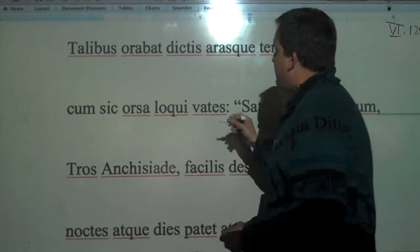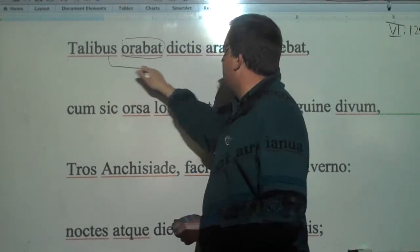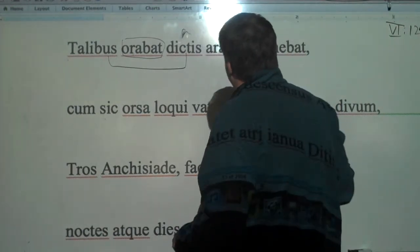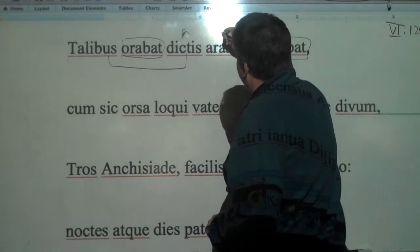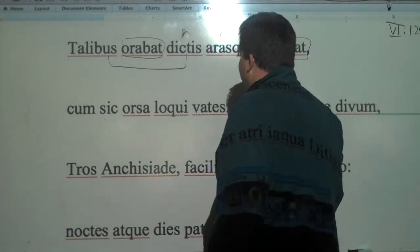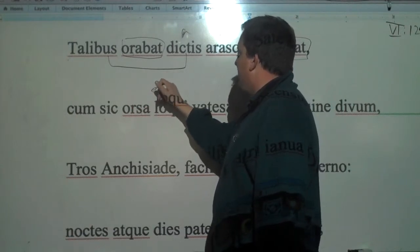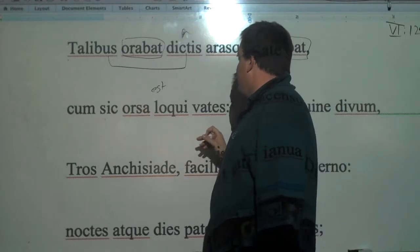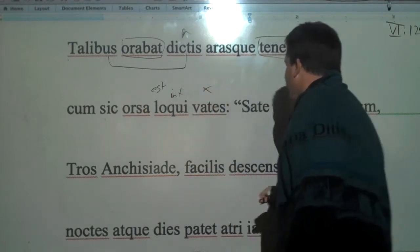So we have here orabat talibus dictis - so he was begging with such words. This was Aeneas, he just finished here. With such words, sorry, ablative, arasque tenebat - he was holding the altar. So he's supplicating when thus the prophetess, and S has been left out, began to speak.